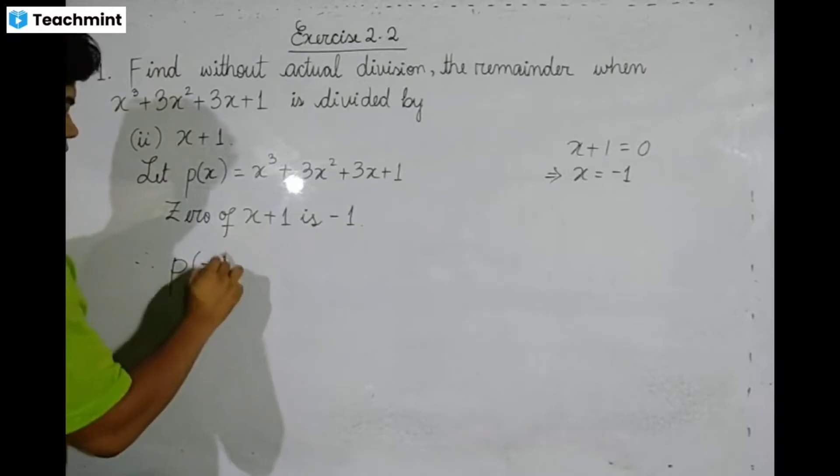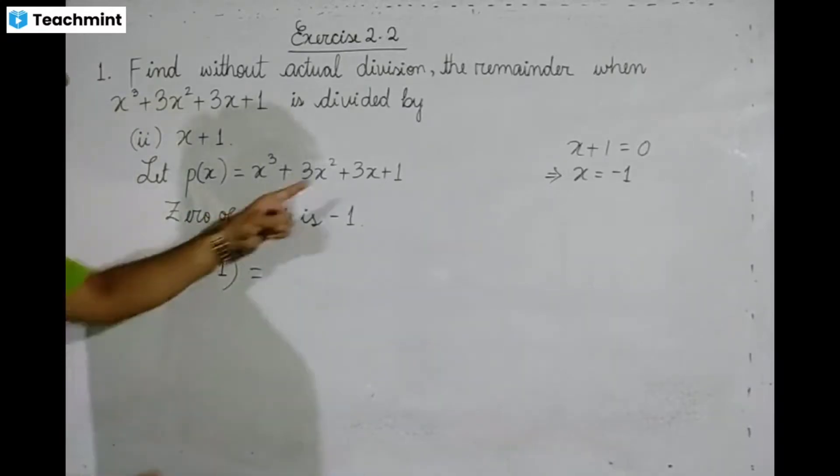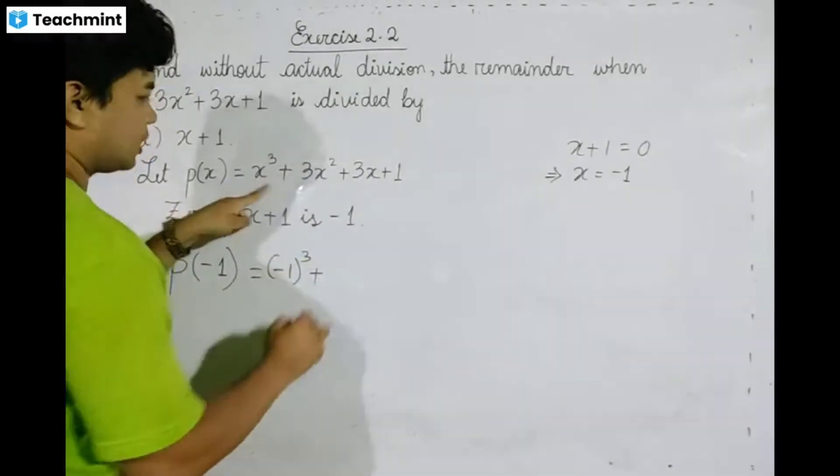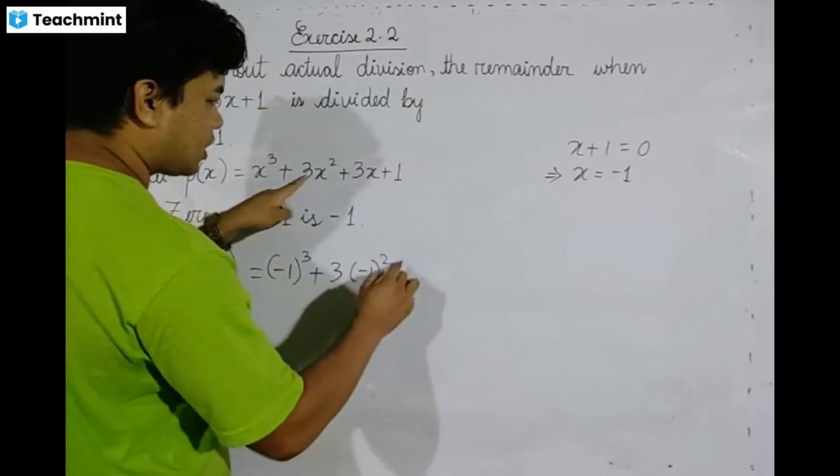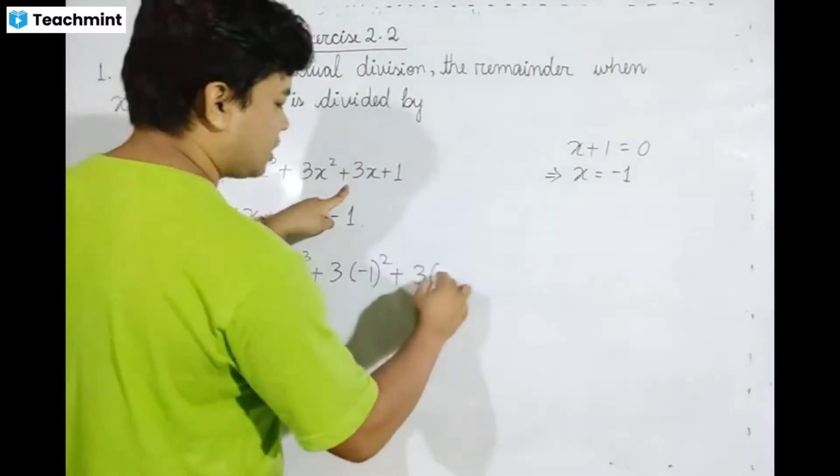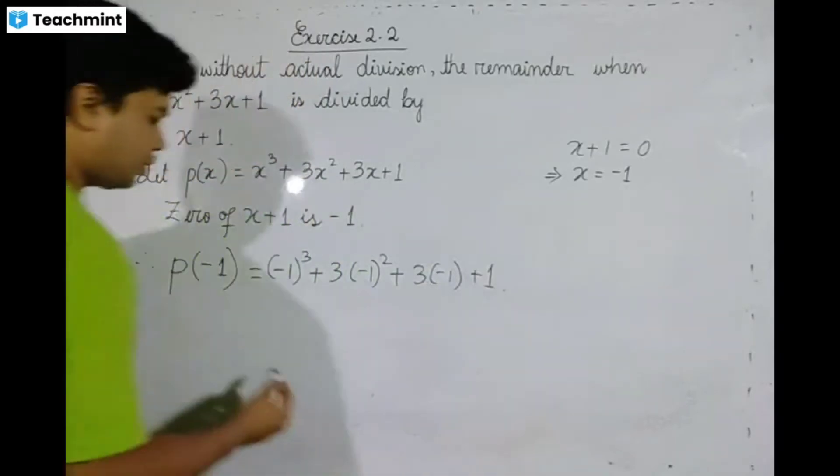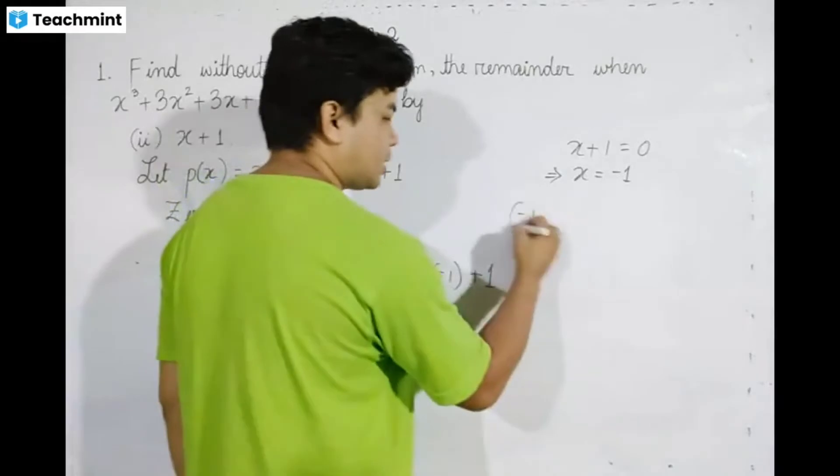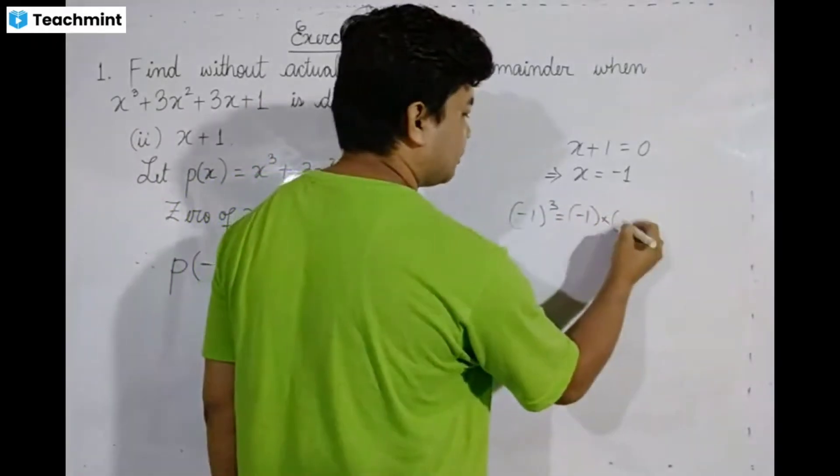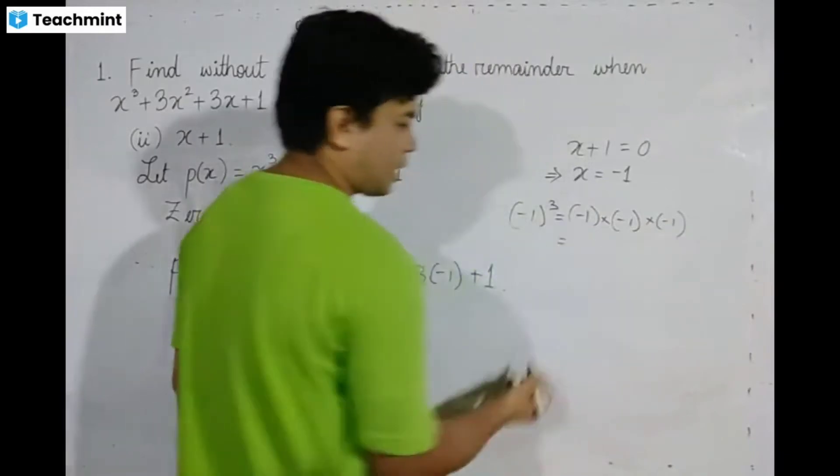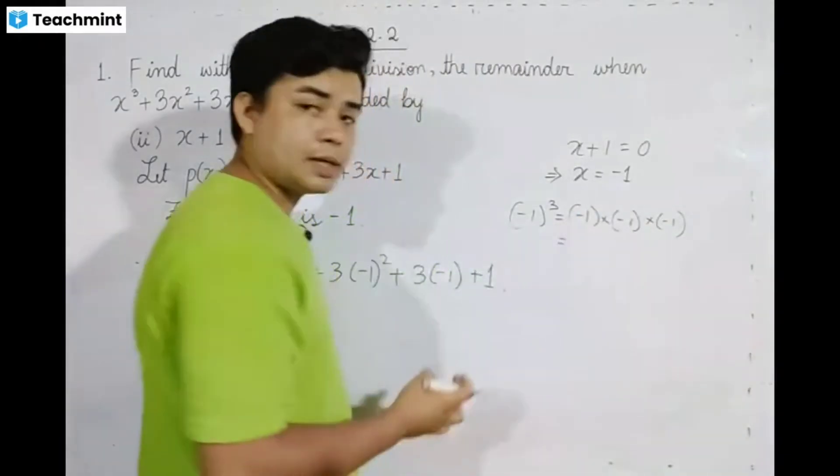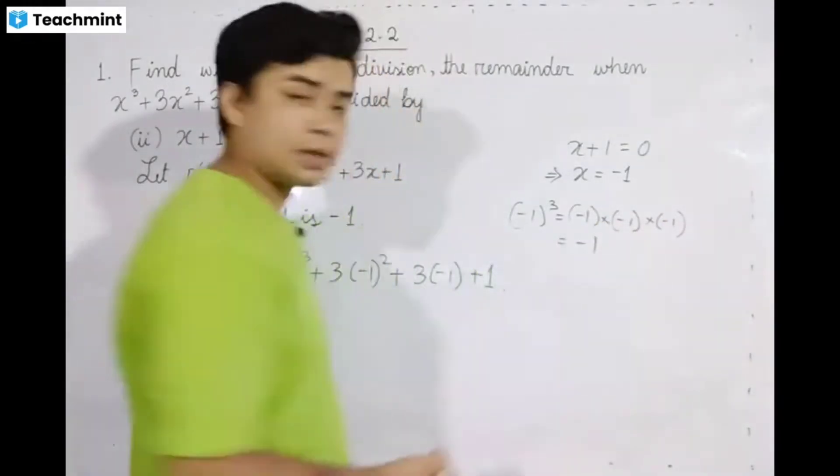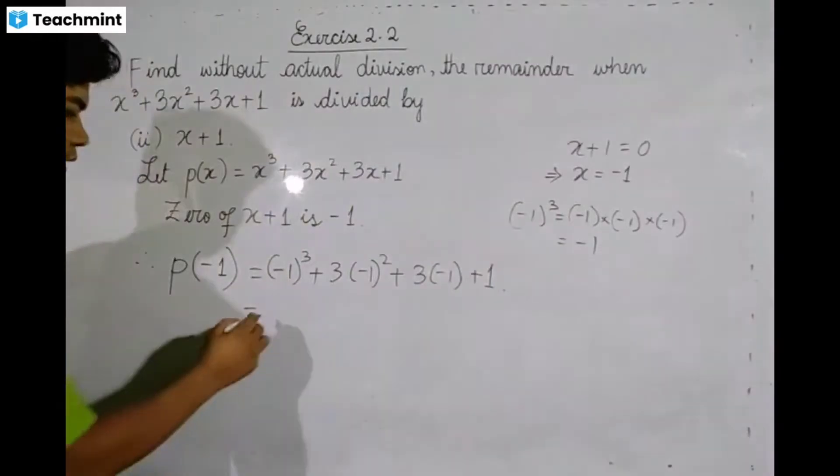Substitute x = -1 into p(x): p(-1) = (-1)³ + 3(-1)² + 3(-1) + 1. First, (-1)³ = -1, and (-1)² = 1.